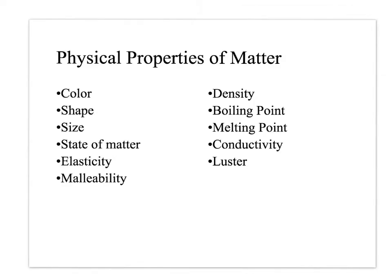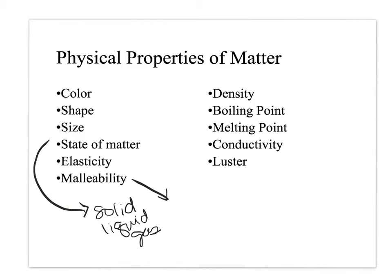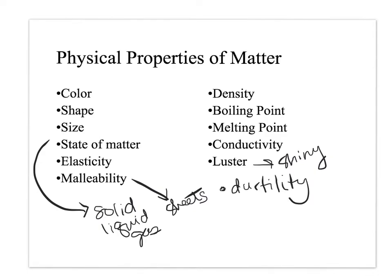Some physical properties of matter: color, shape, size, and the state of matter — remember, that's solid, liquid, and gas. Others include elasticity (does it stretch?), malleability (pounding it into sheets), density, boiling point, melting point, conductivity, and luster (is it shiny?). Another one to add is ductility — ductility is whether or not a substance can be pulled into a wire.